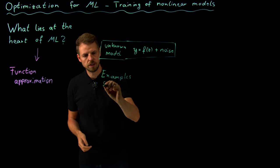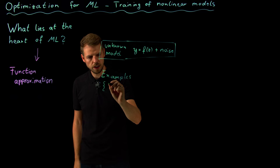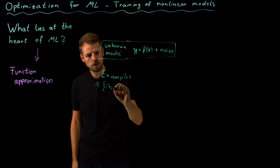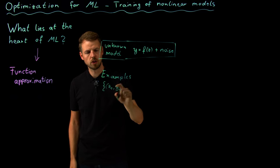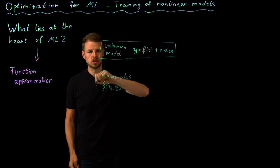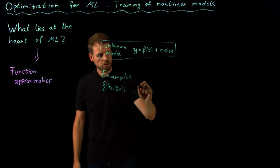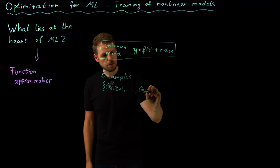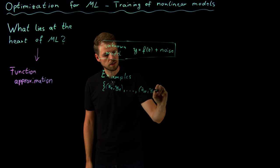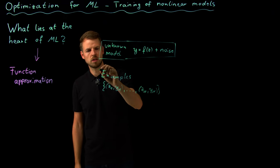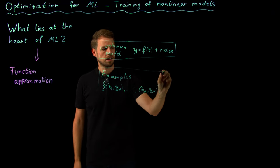We have a set of input and output tuples. This is why it's called supervised: because we know the answer that our model is going to give us. Of these we have not one but capital N examples.